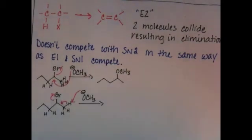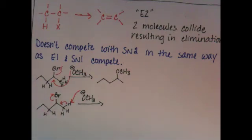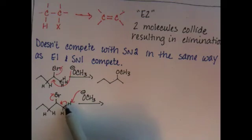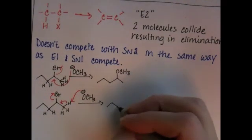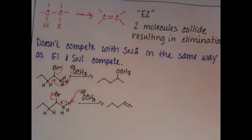See how that happens just all at once. The nucleophile hitting one of those protons, the carbon-hydrogen electrons moving to make a double bond, the leaving group going away so that the double bond can be formed, and you get this alkene.